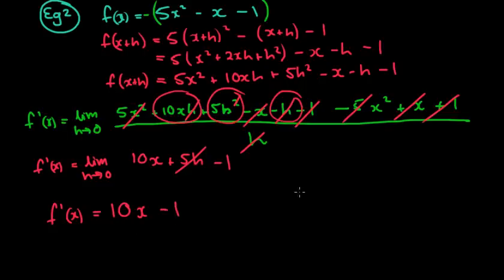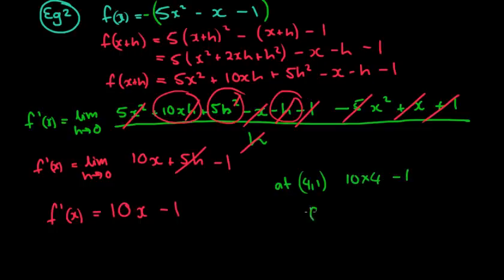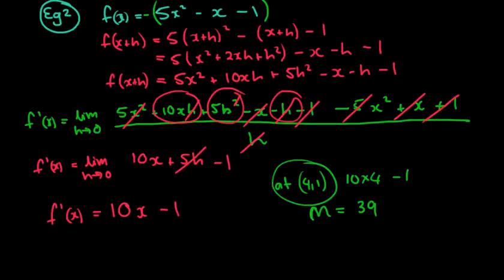Now if they asked for the gradient at a particular point — say at the point (4, 1) — that would be 10 times 4 minus 1, so the gradient would equal 39 at that particular point. But that was just an added question; this example only asked for the general derivative.